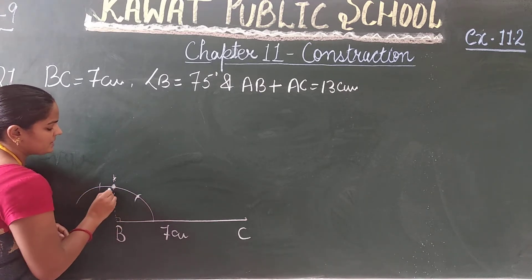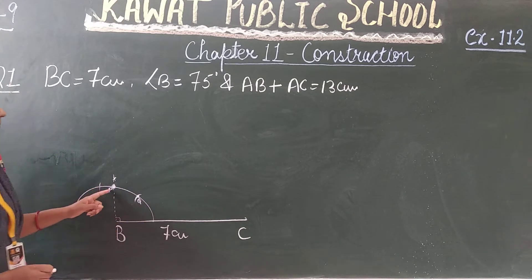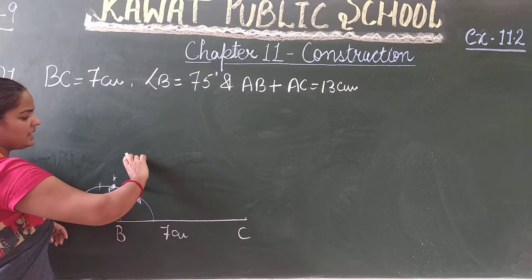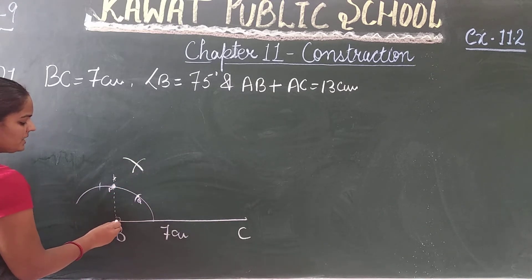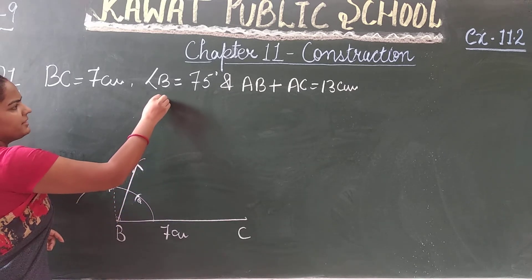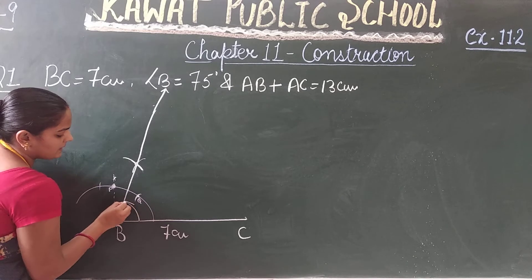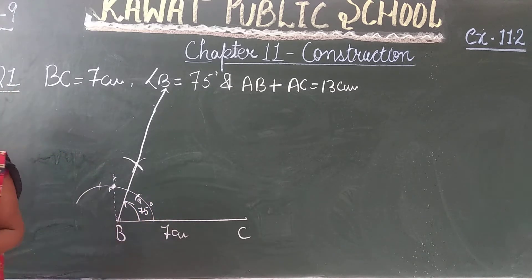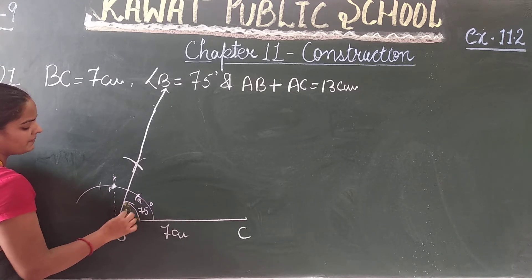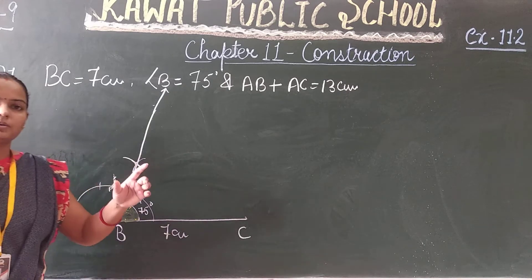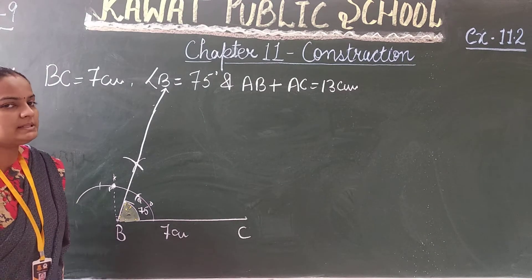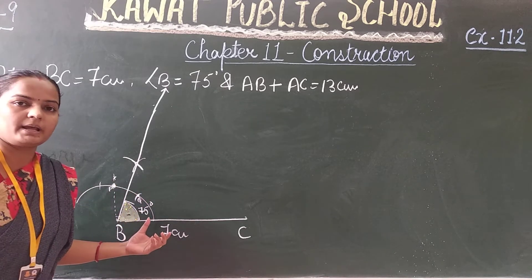So 75 degrees, how is it? This point has to be known as P, this point needs to be known as Q. Draw a small arc at Q. Again with similar measurements. So this angle, the intersection point will join in this form. This angle is 75 degree angle.